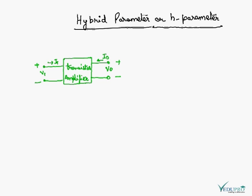Here we can see that this is VI. VI is a function of II and V0 output voltage. And I0 which is the output current is a function of input current and the output voltage.